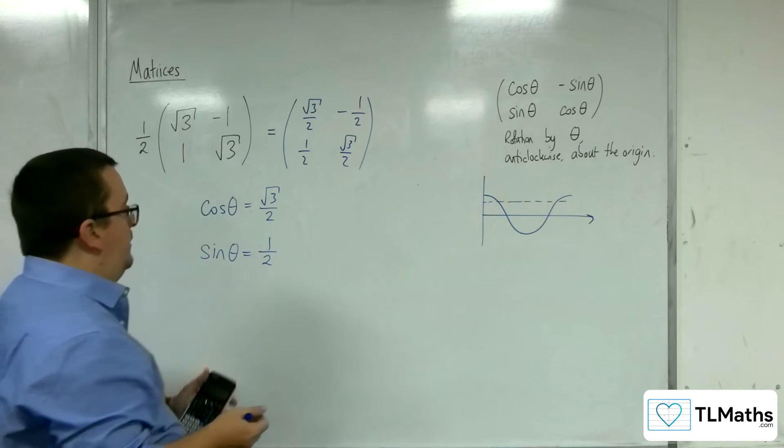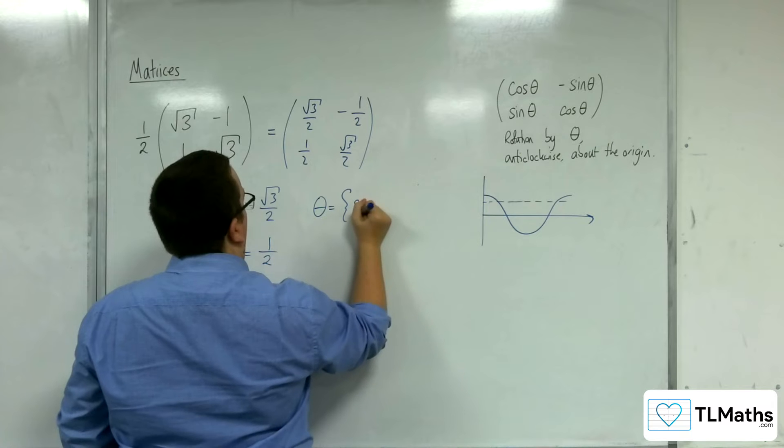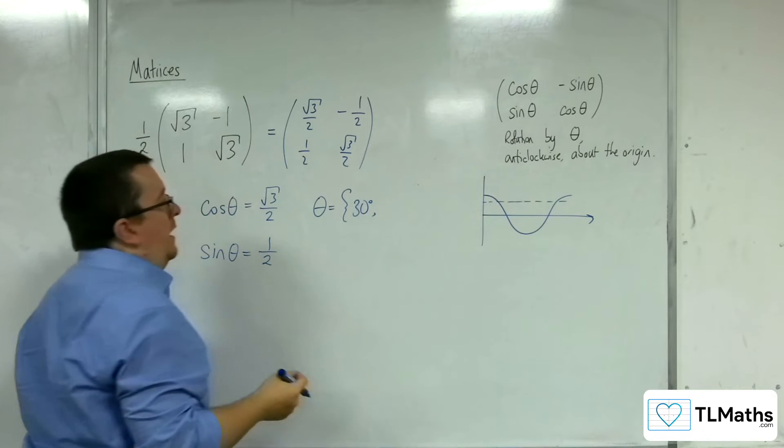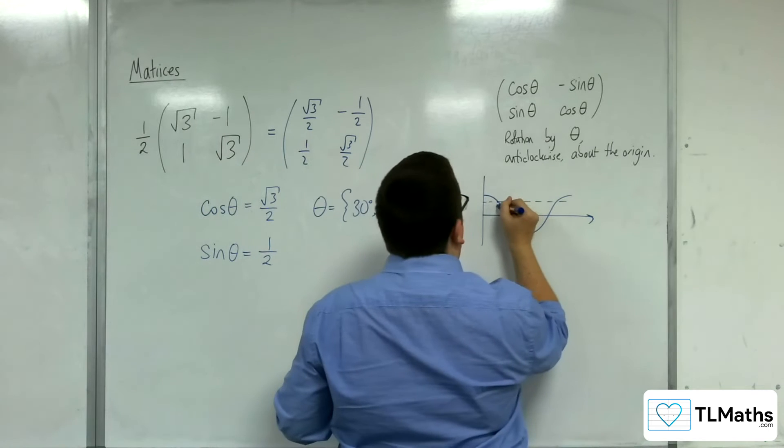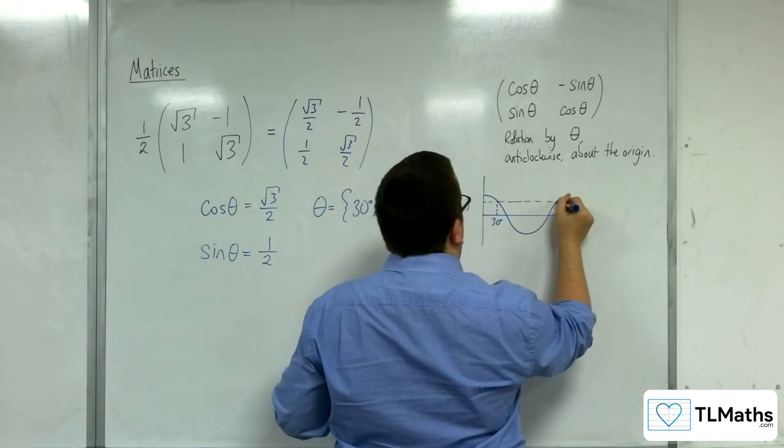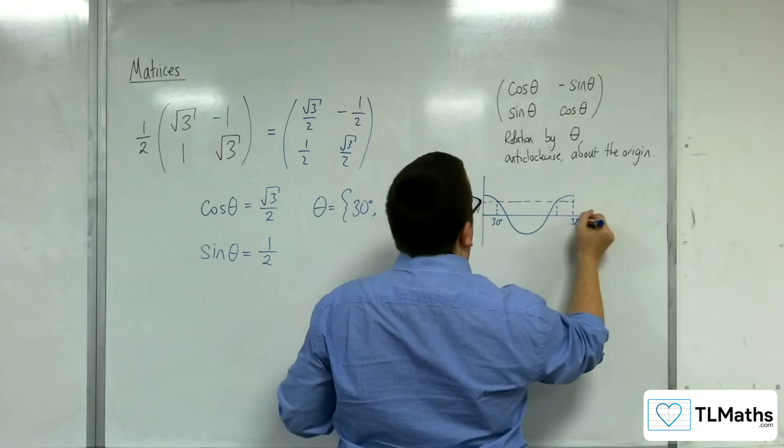And I'm just looking at between 0 and 360 here. So that's the 30, and the second solution is 30 degrees down from the 360, so 330.